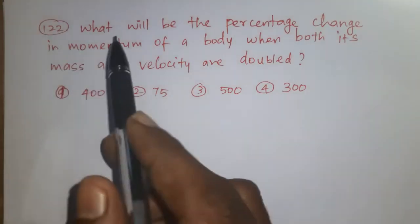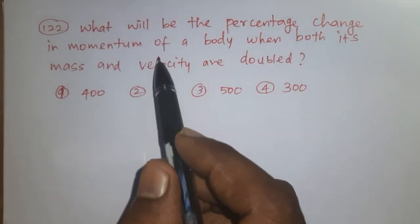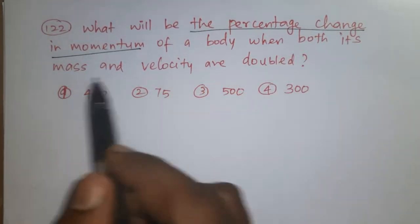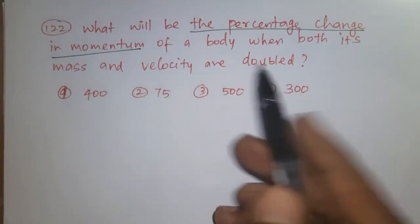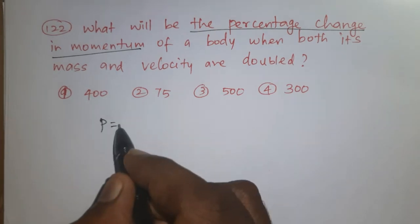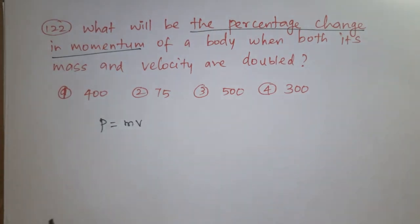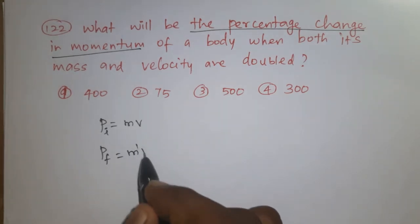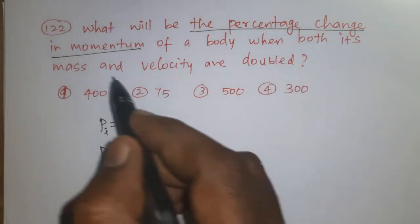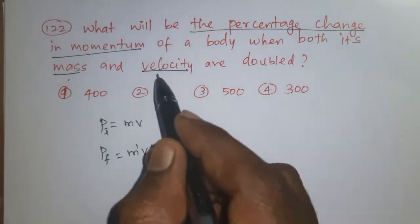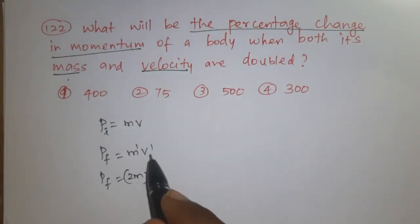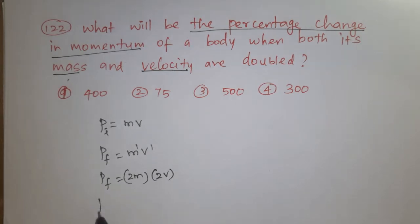Question number 122. What will be the percentage change in momentum of a body when both its mass and velocity are doubled? Momentum formula: P = mass × velocity. Initial momentum PI = MV. Final momentum PF: if mass is doubled, 2M; if velocity is doubled, 2V. So PF = 2M × 2V = 4MV.